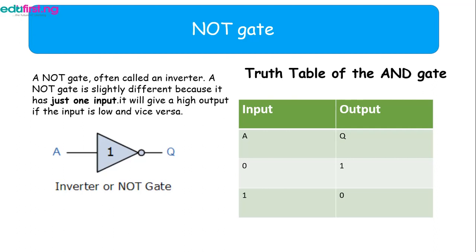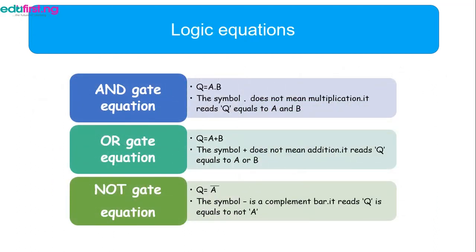So now let's talk about logic equations. The first one is the AND gate equation, which is represented by a dot sign. Now the dot sign does not mean multiplication. It just shows that Q is equals to A and B. That means A and B has to be the same or has to be ON for you to have an output of ON.